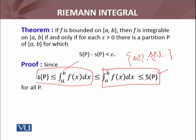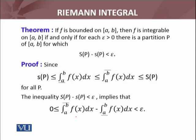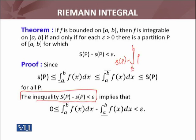Now, we consider the difference: the upper integral minus the lower integral, which is greater than or equal to zero. From our supposition, this inequality implies that if I subtract the lower integral from S(P), we will have S(P) minus the lower integral of f(x) dx, which is less than or equal to the lower integral of f(x) dx minus the lower integral — giving zero.